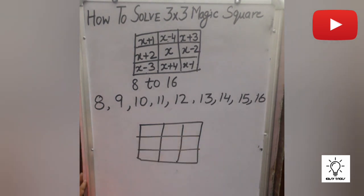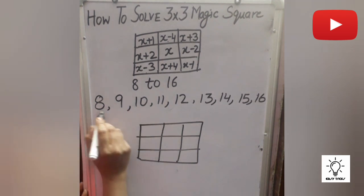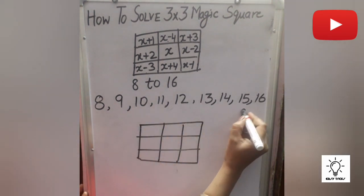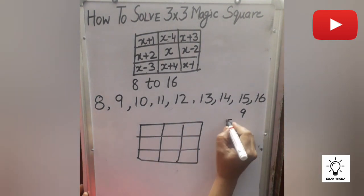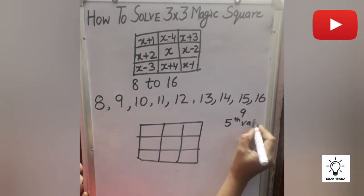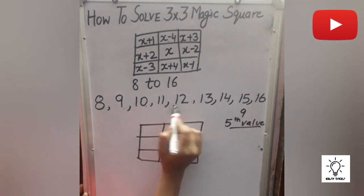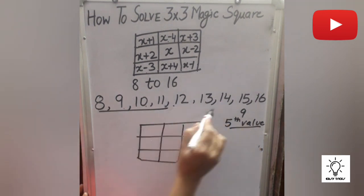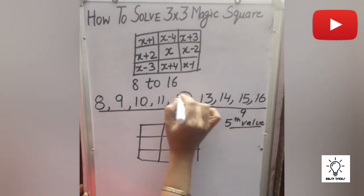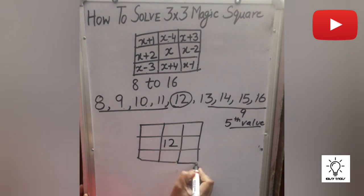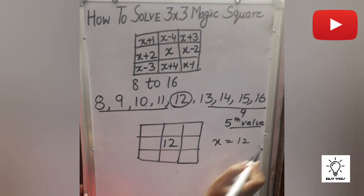So what is the value of x? x is always the middle number. We have a total of 9 numbers, so the number on the fifth place is x — leaving 4 numbers from the left and 4 numbers from the right. The fifth number is 12, so we write 12 here. x equals 12.